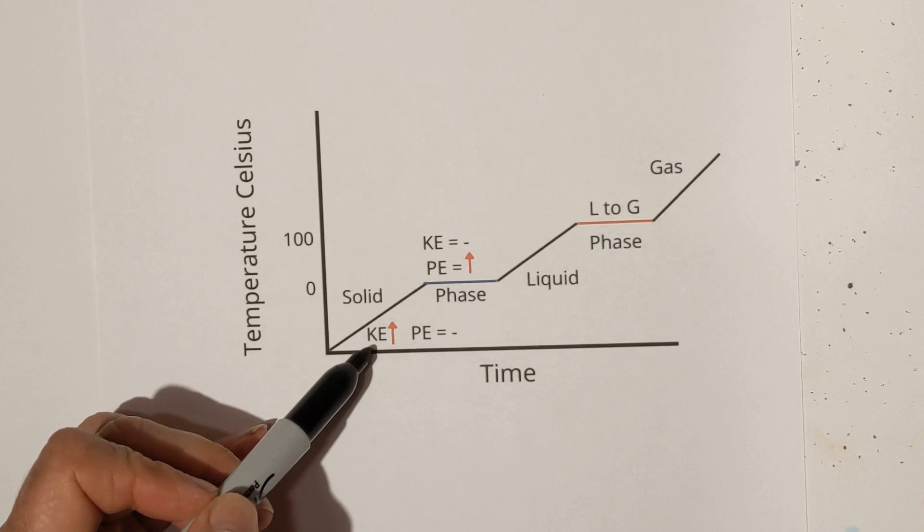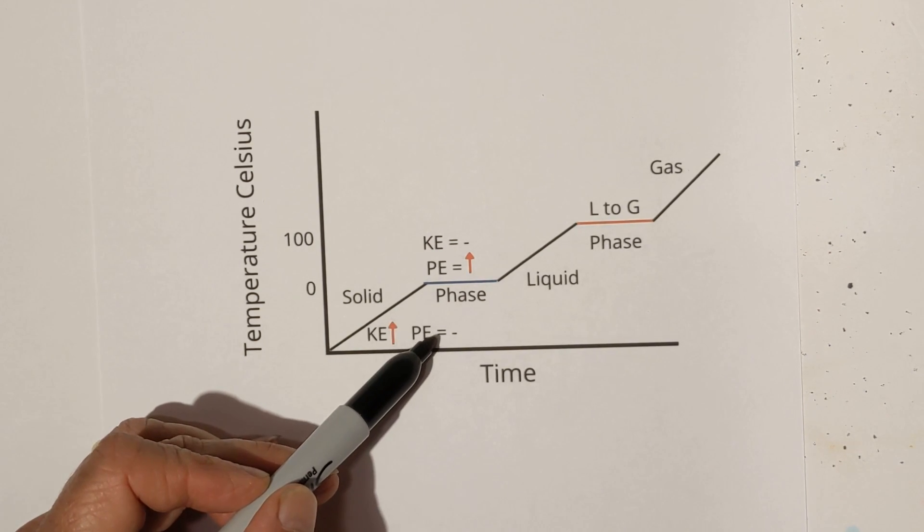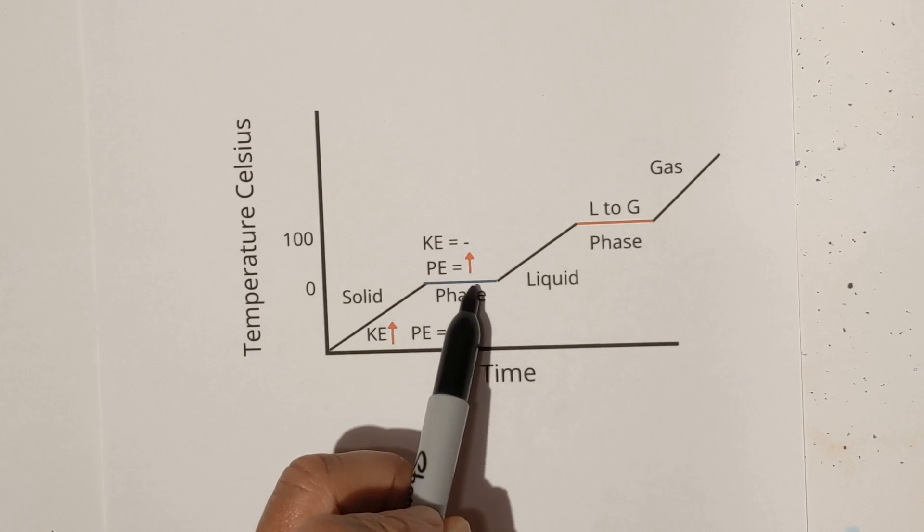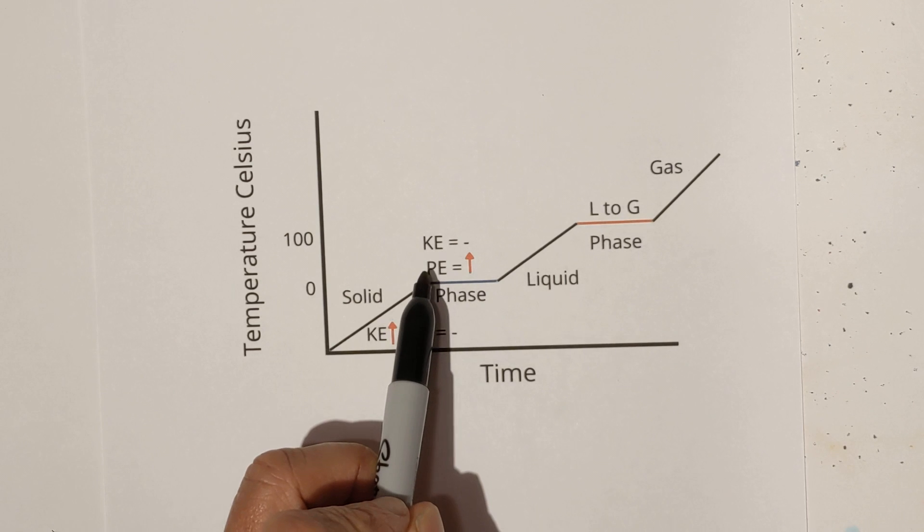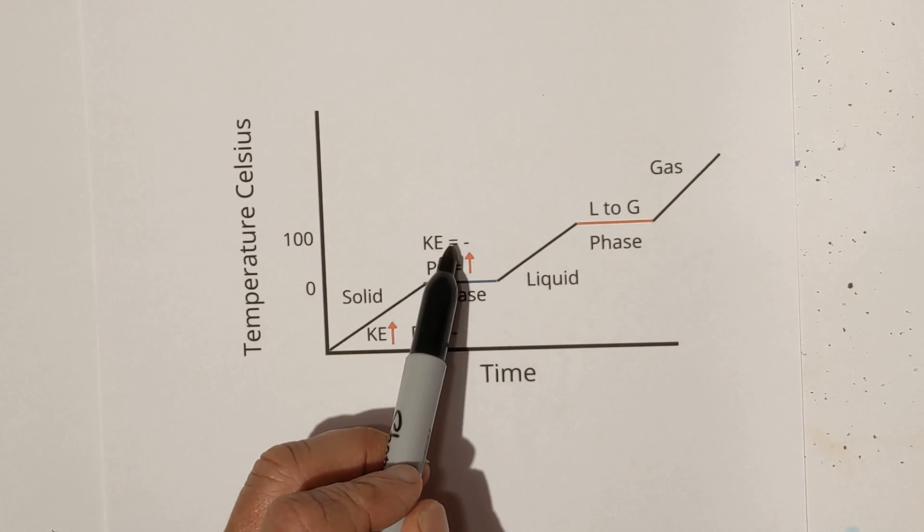As temperature goes up kinetic energy also goes up. The potential energy is neutral. It's constant. However when we get to the phase change it switches. The potential energy goes up and the kinetic energy is now constant.